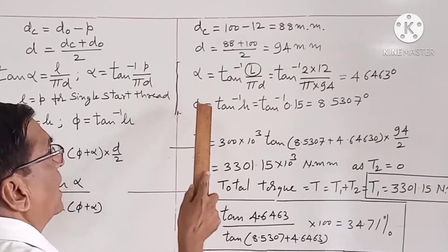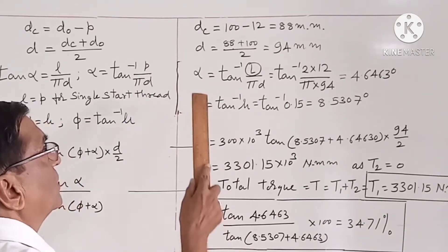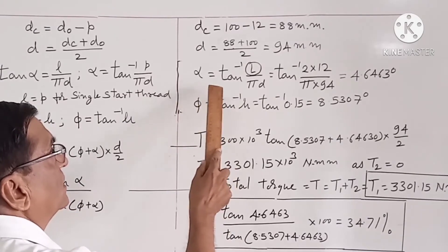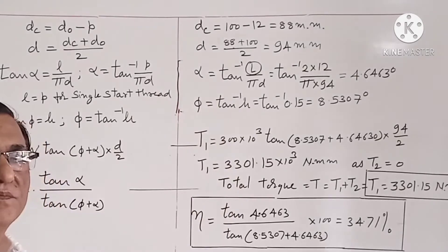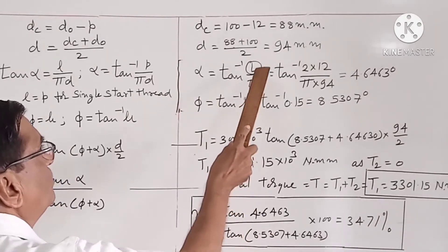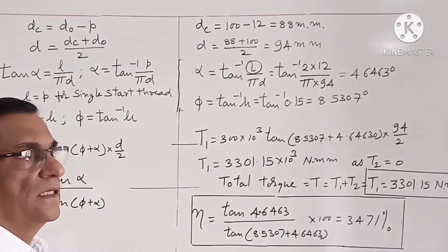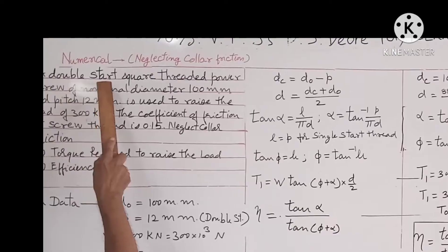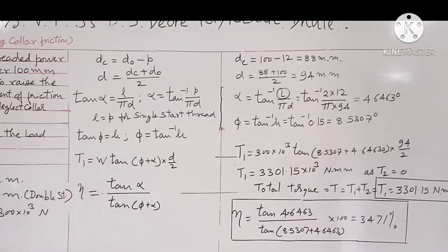Next we calculate α and φ. For α, care should be taken. Instead of pitch, we have to take lead, because this is a double start thread.